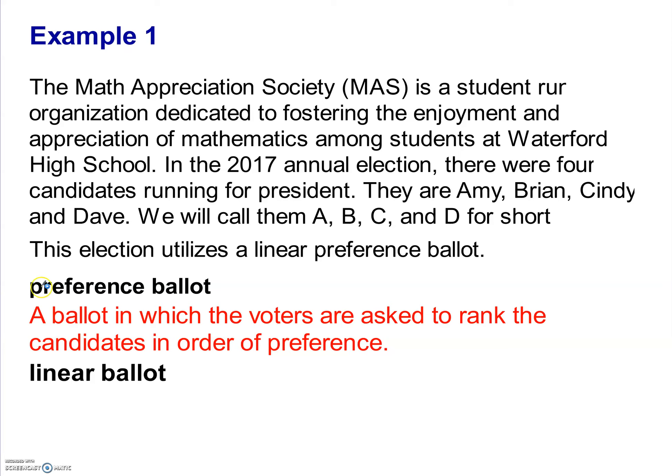All of our ballots are preference ballots, and in addition, they're all linear ballots. A linear ballot means that on my particular ballot as a voter, I cannot say I like Amy and Brian the same — I have to choose one over the other. I am not allowed to choose a tie on my individual ballot. That's not to say we can't have a tie in an election; we just can't have a tie on the ballot itself.